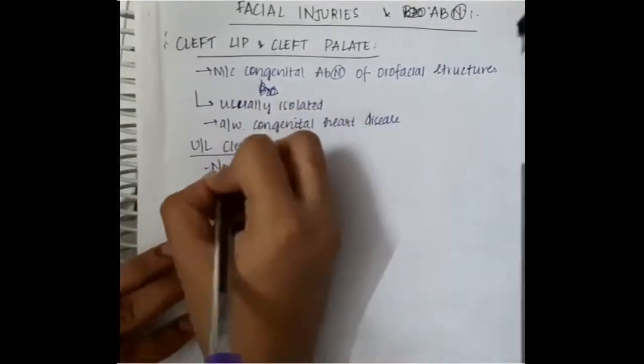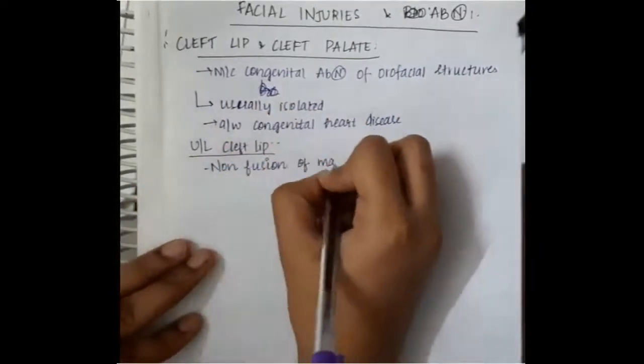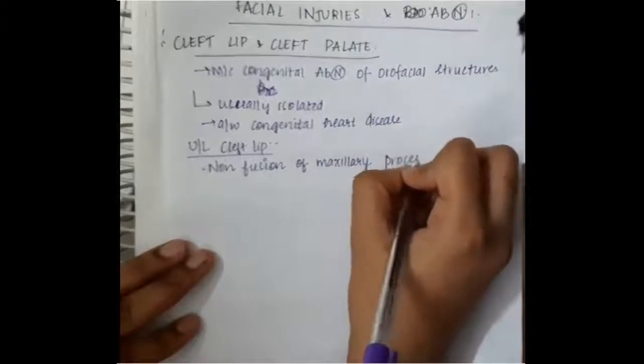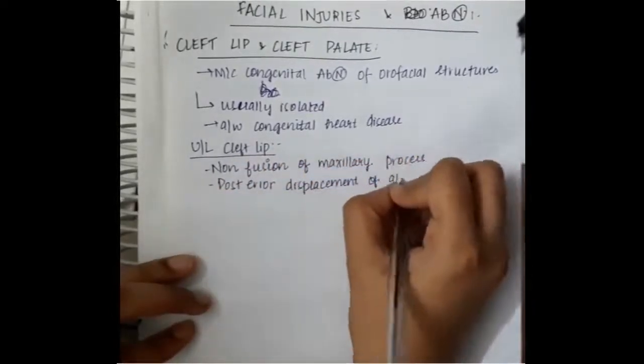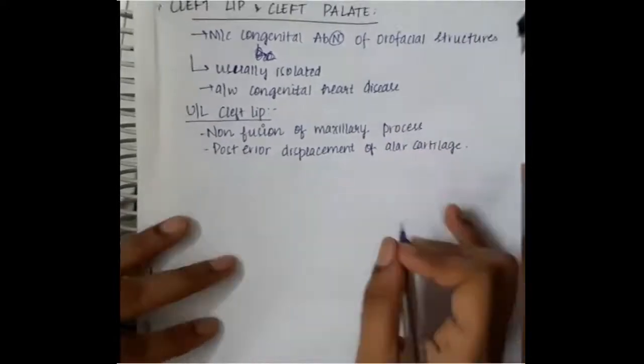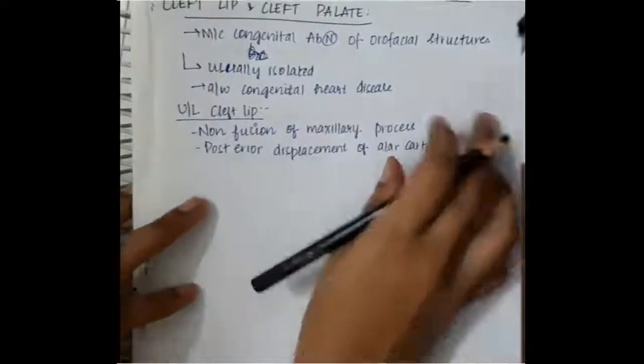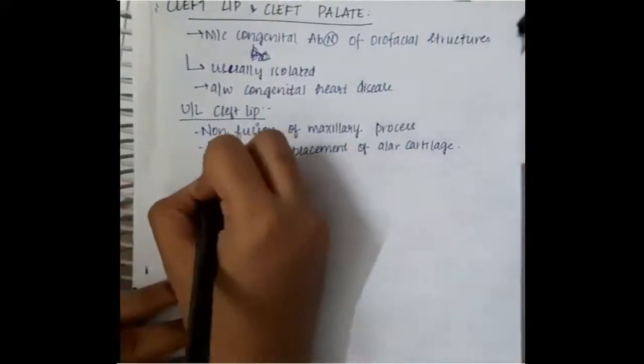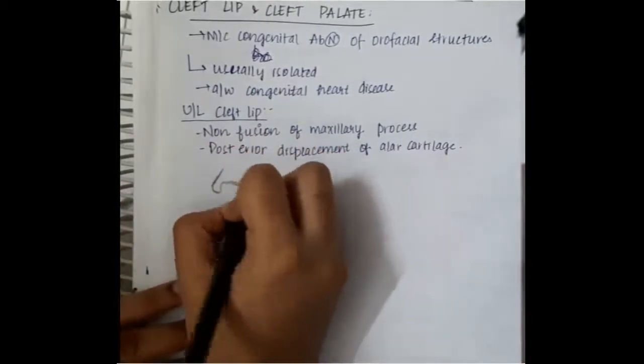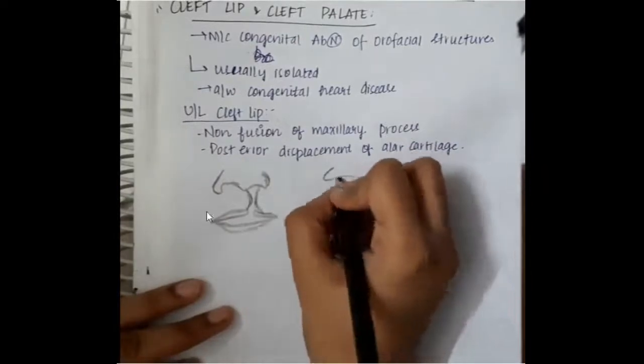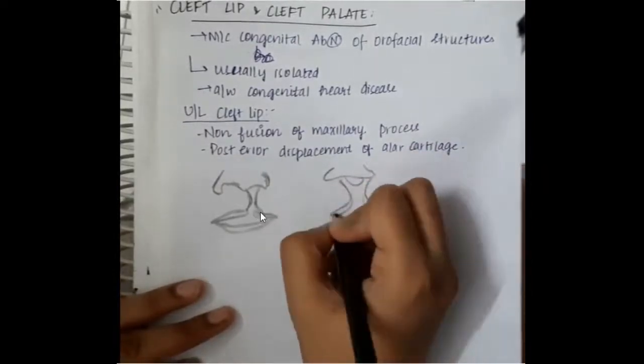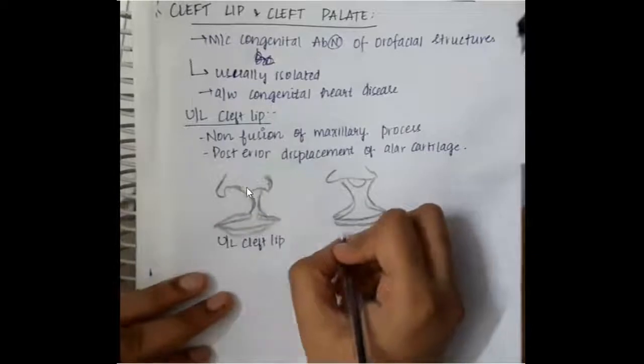First we will see unilateral cleft lip. Unilateral cleft lip occurs due to the non-fusion of maxillary process and posterior displacement of alar cartilage. If you see this picture, this is the nose, this is the cleft lip which is joining. Here the maxillary processes which should be fused are not fused properly and the alar cartilage is displaced posteriorly.